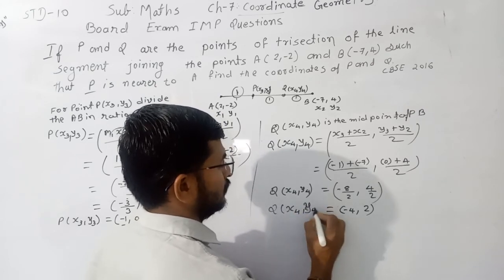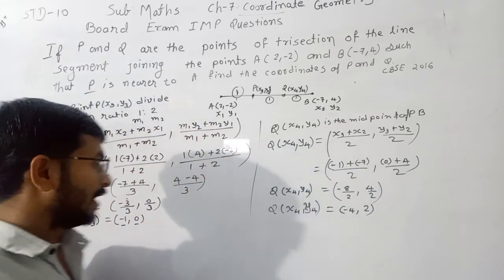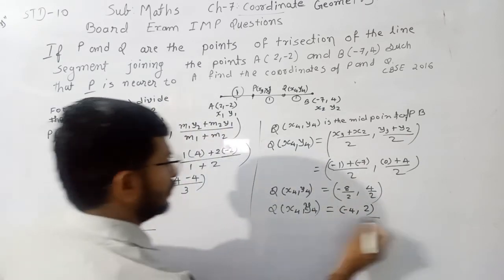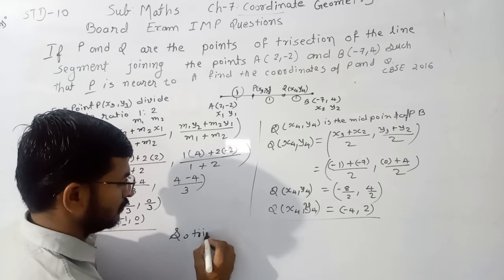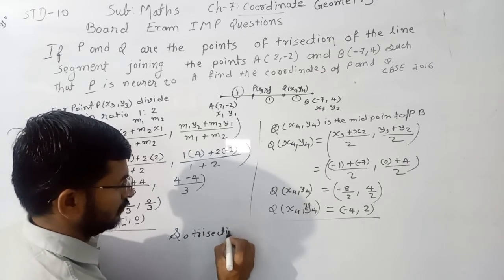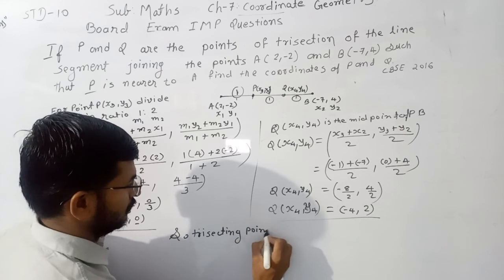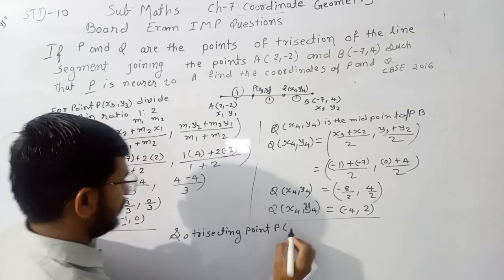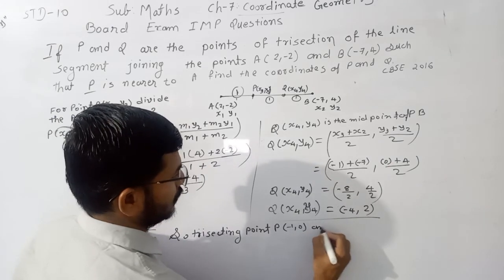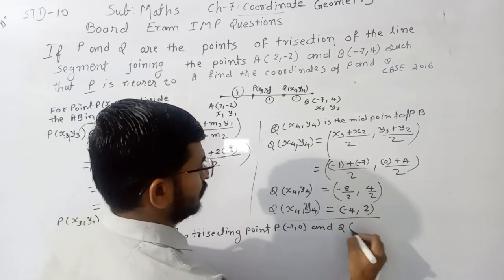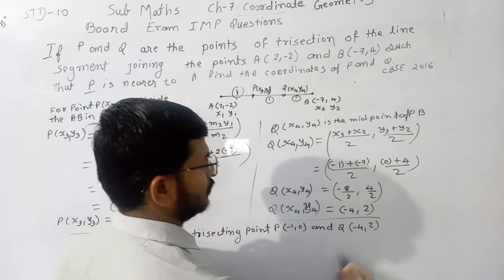So vertices Y4. Now our answer is trisecting point P(-1, 0) and Q(-4, 2). Okay.